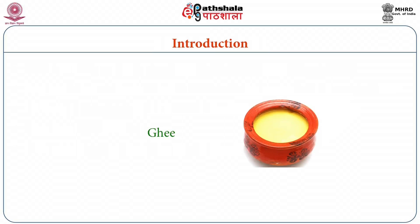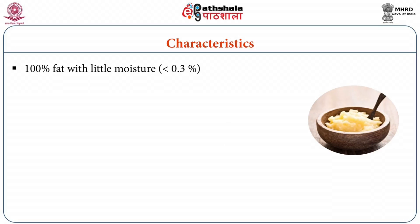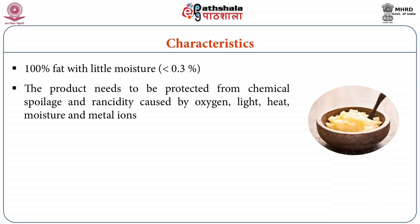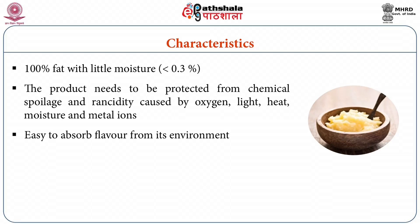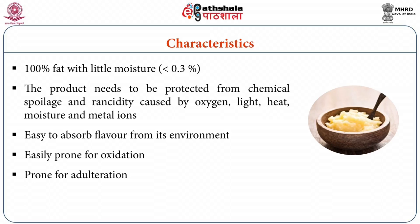Coming to ghee, it is almost 100 percent fat with very little moisture — around 0.2 to 0.3 percent — obtained by boiling butter at 110 to 115 degree Celsius until all the water is evaporated, giving a grainy texture and characteristic flavour. The product needs to be protected from chemical spoilage and rancidity caused by oxygen, light, heat, moisture, and metal ions. Ghee generally has a tendency to absorb flavour from the environment, like butter, as it is also a fat-rich product. Ghee is prone to oxidation as well as adulteration, as it is purely milk fat and is very costly.